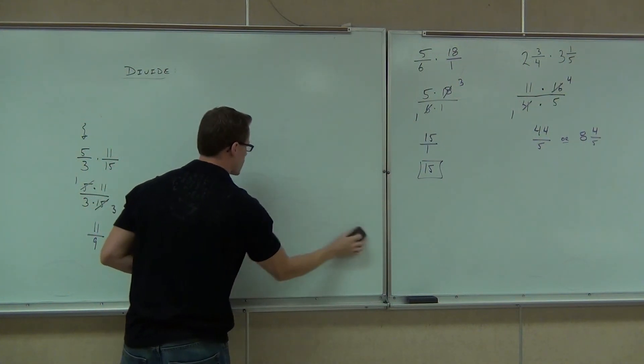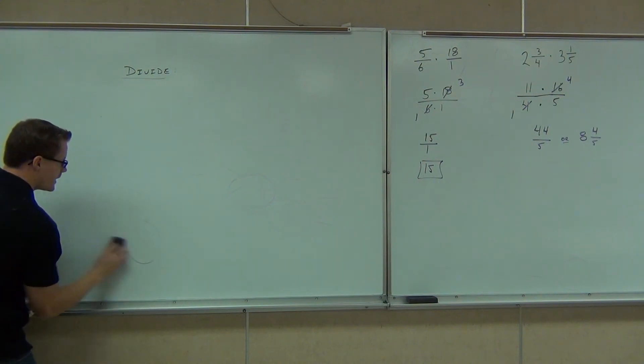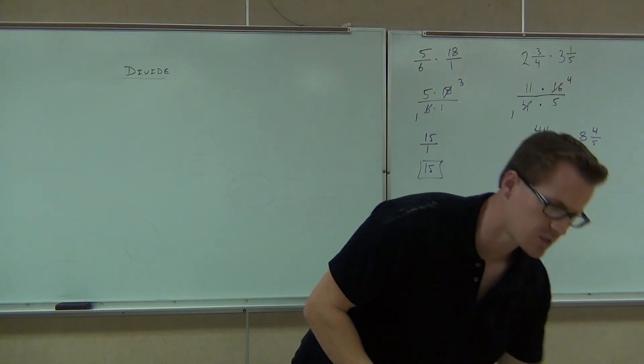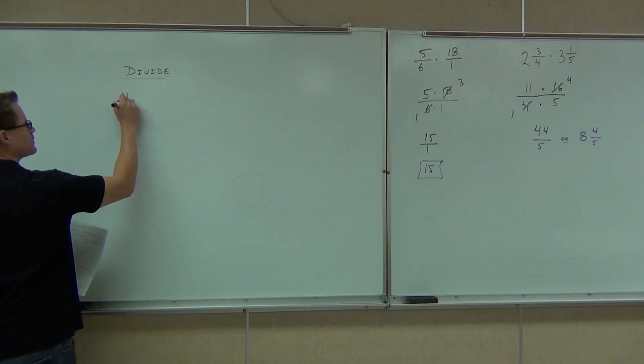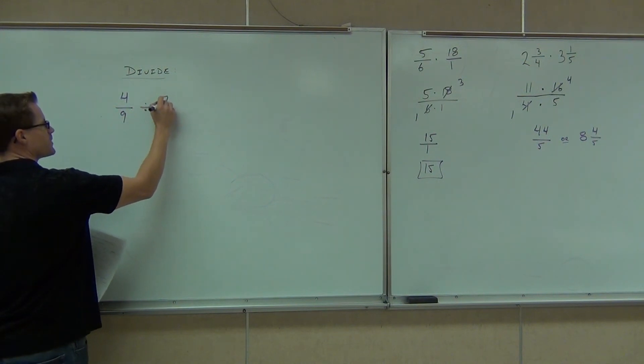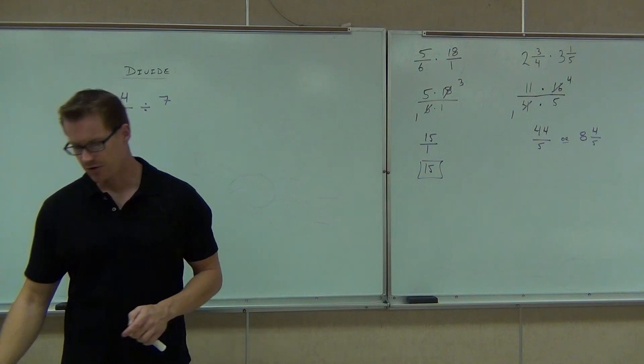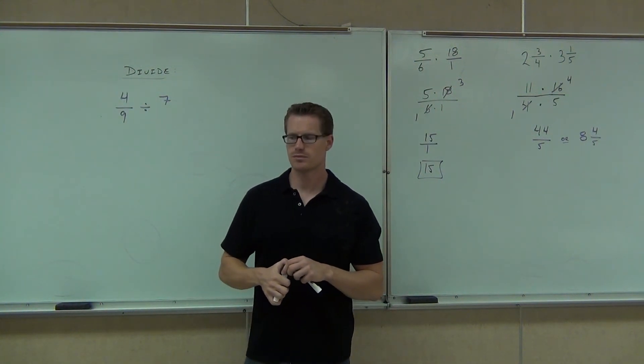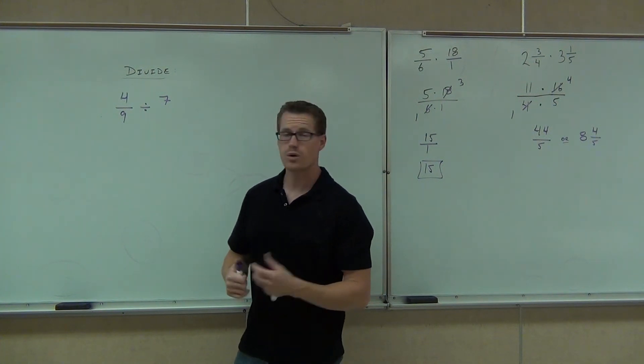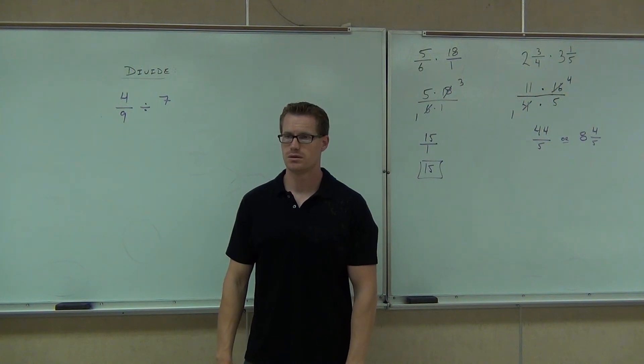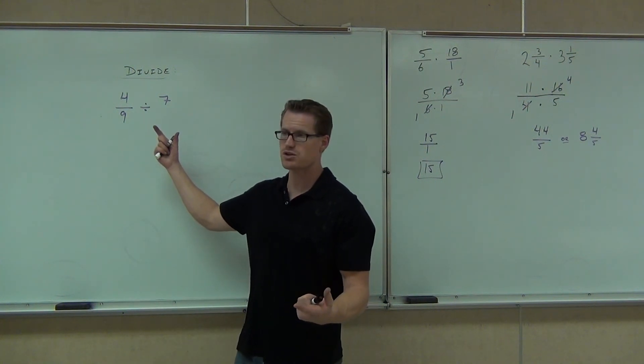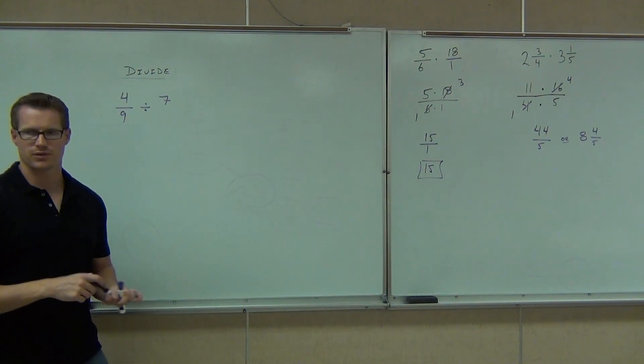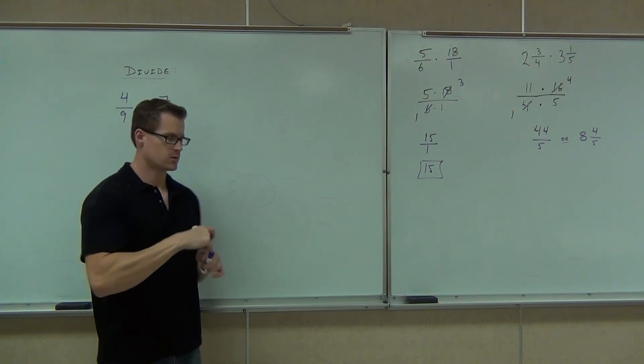The last thing I want to talk about, before I give you a couple examples here, is how to divide some fractions. We're going to look at that right now. If we're going to divide fractions that have some mixed numbers in it, we're going to start with something like, let's just do 4/9 divided by 7. Can you do that problem? What do you have to do first, though? You probably have to change this whole number into a fraction at some point, right? That way we can work with this as a fraction. How do you change 7 into a fraction? Put it over 1.